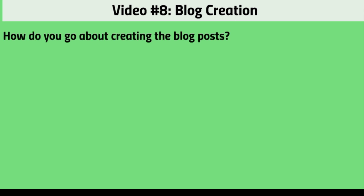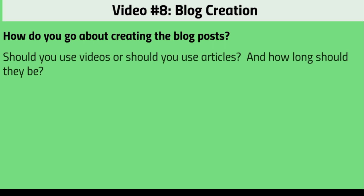Hello and welcome to video eight — blog post creation. Now that you have a list of topics, how do you create the posts? Should you use videos or articles, and how long should they be? Looking back at the BuzzSumo examples, articles were about 1,000 to 1,500 words — that's standard today. Getting to 2,000 words with an accompanying video will significantly boost retention for visitors who land on your blog.